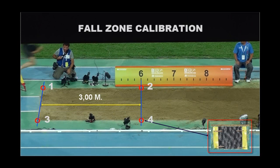When we have the cab ready, we have to calibrate the fall zone. Before this, we have put four marks.